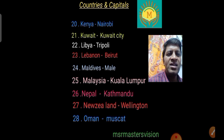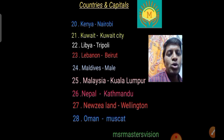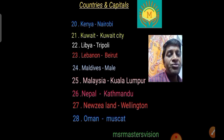The eighteenth country is Japan, capital Tokyo. The nineteenth country is Jordan, capital Amman. The twentieth country is Kenya, capital Nairobi. The twenty-first country is Kuwait, capital Kuwait City. The twenty-second country is Libya, capital Tripoli.